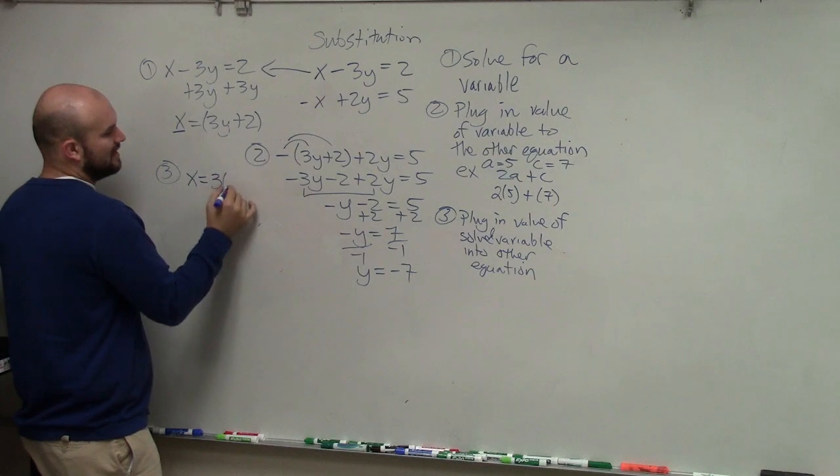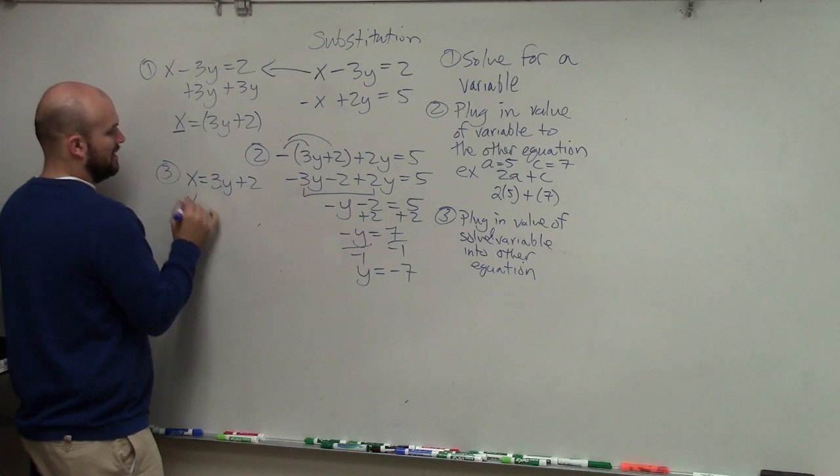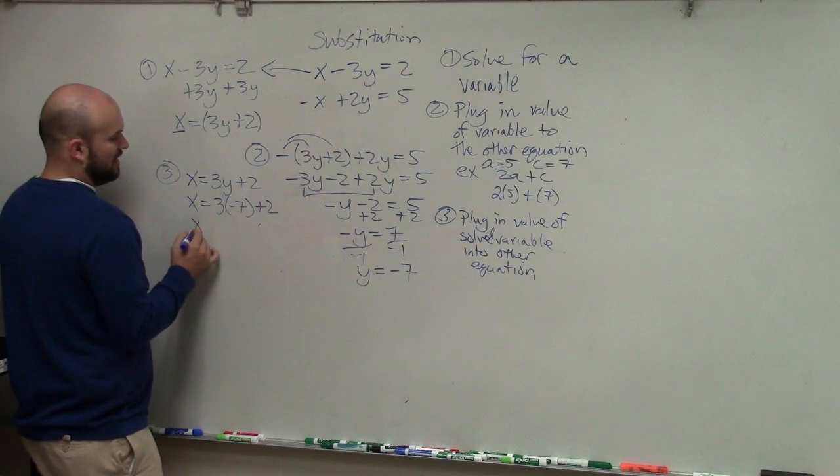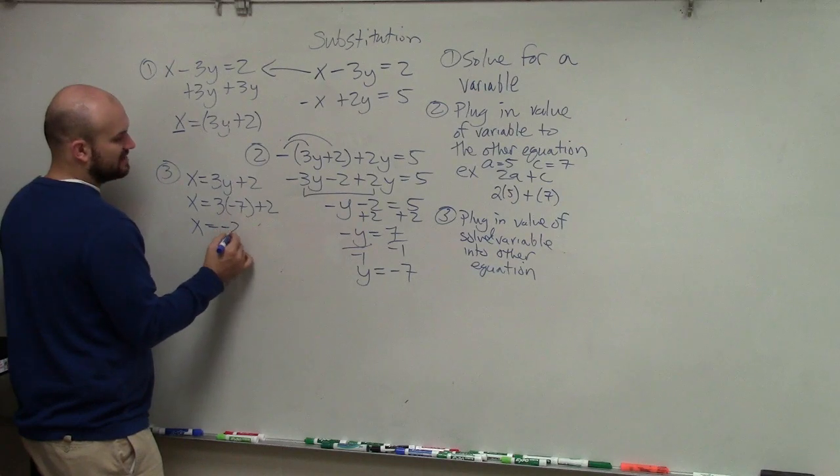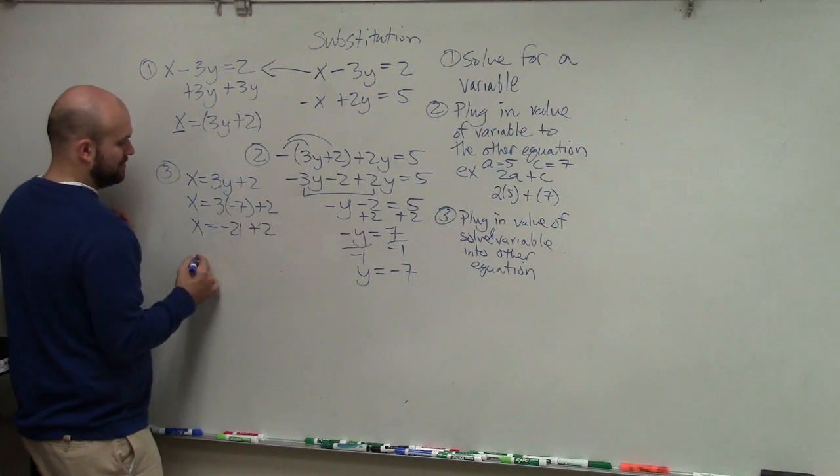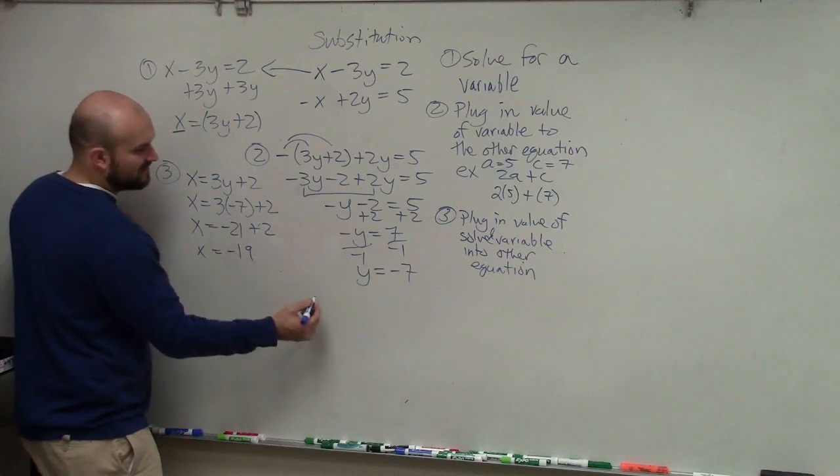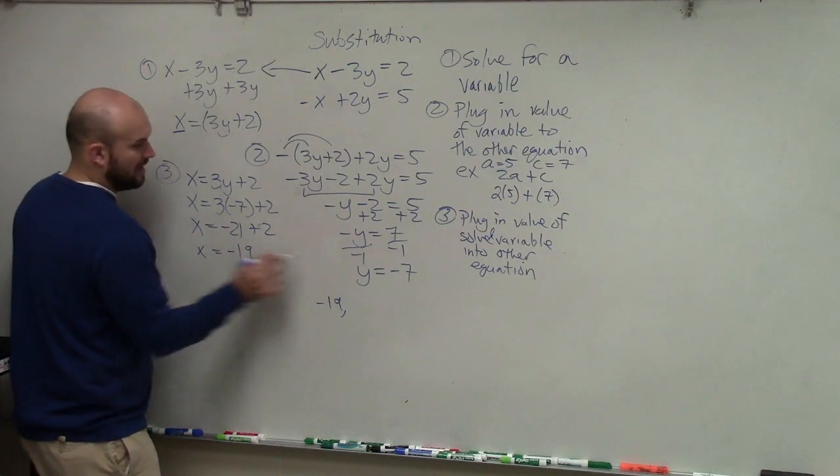So now step 3 is I take y equals negative 7 and I plug that in for y. So x equals 3 times negative 7 plus 2. x equals 3 times negative 7 is negative 21 plus 2. x equals negative 19. So now that's my x value and that's my y value.